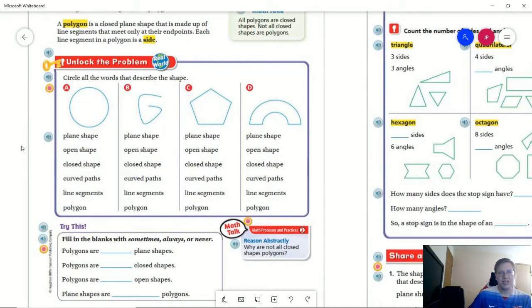Would it be a plane shape? Would it be an open shape? Closed? Does it have curved paths? Is it consisting of line segments? And is it a polygon?